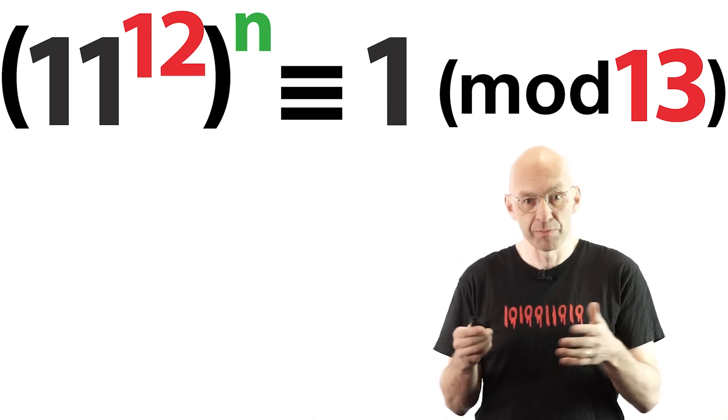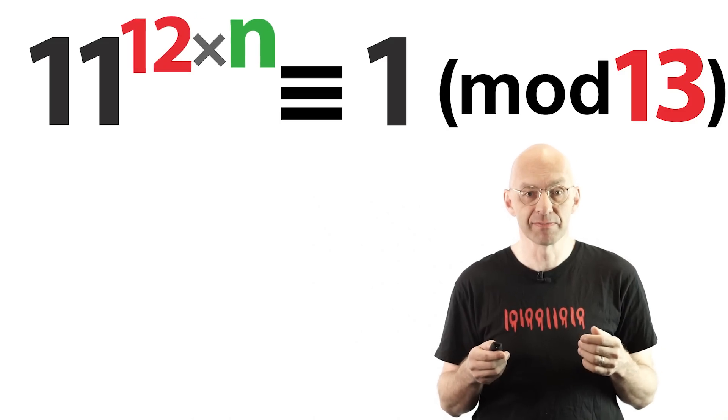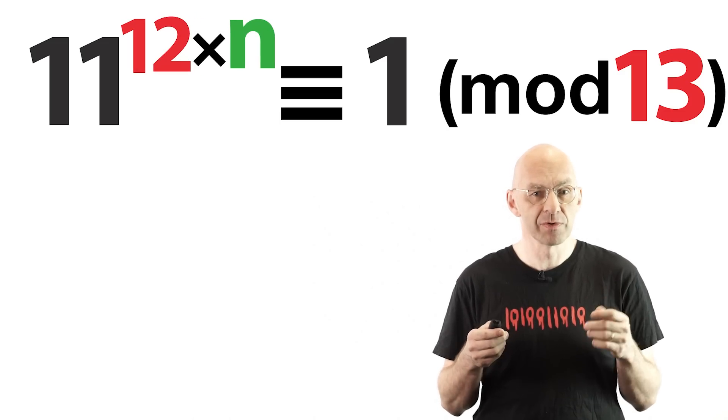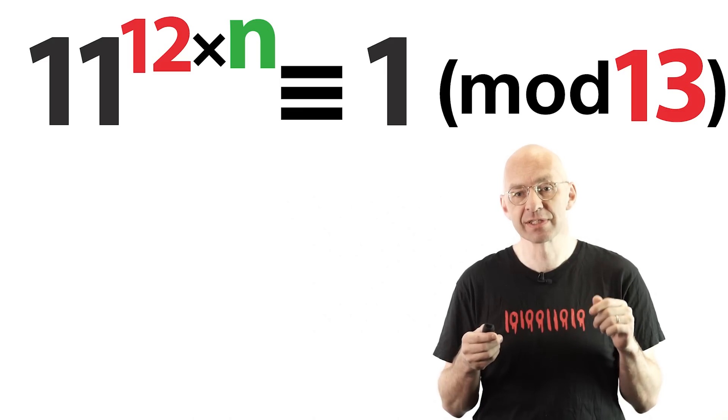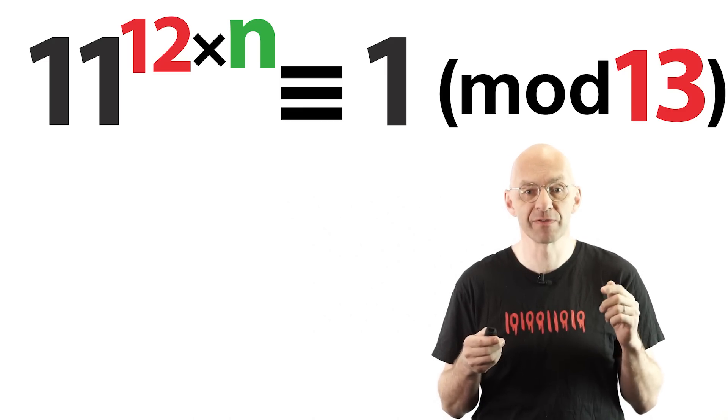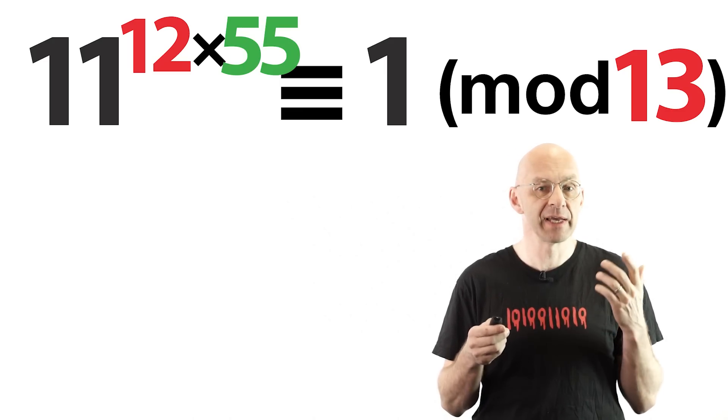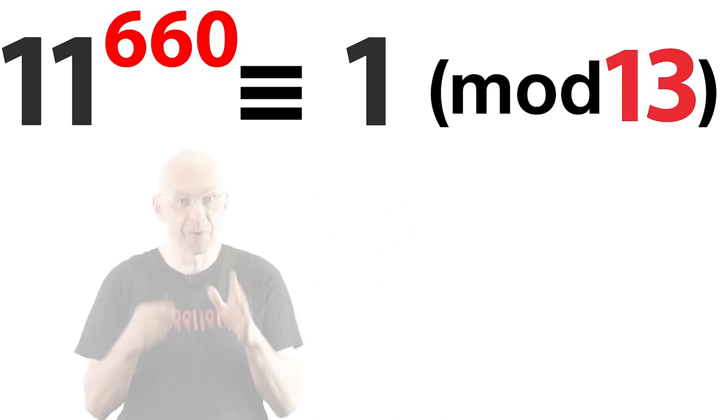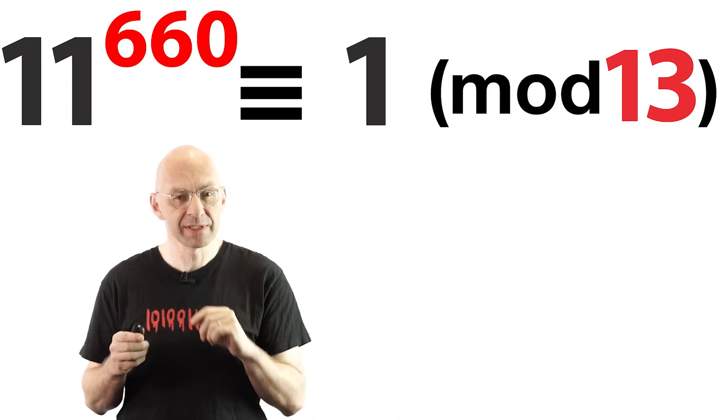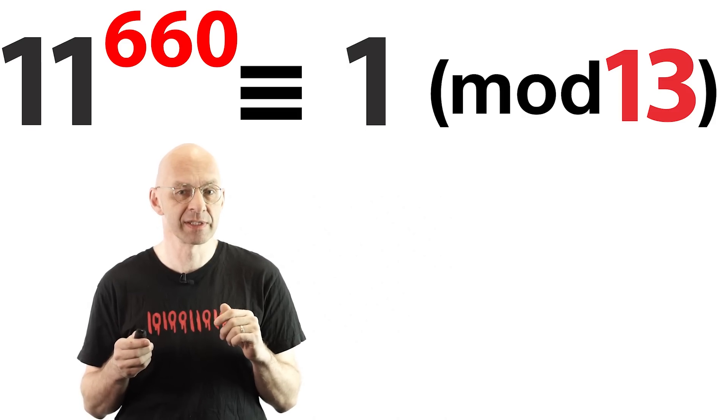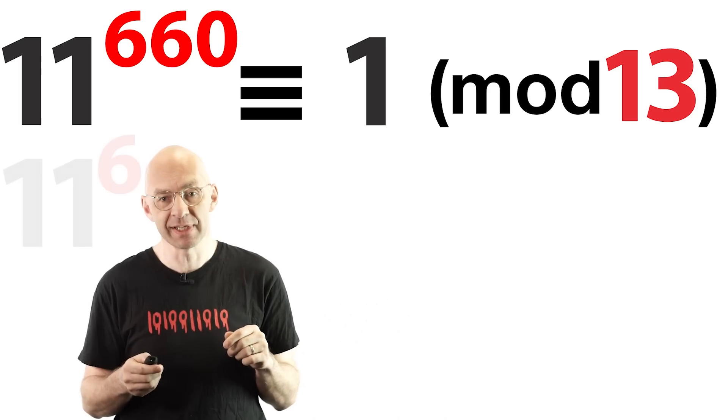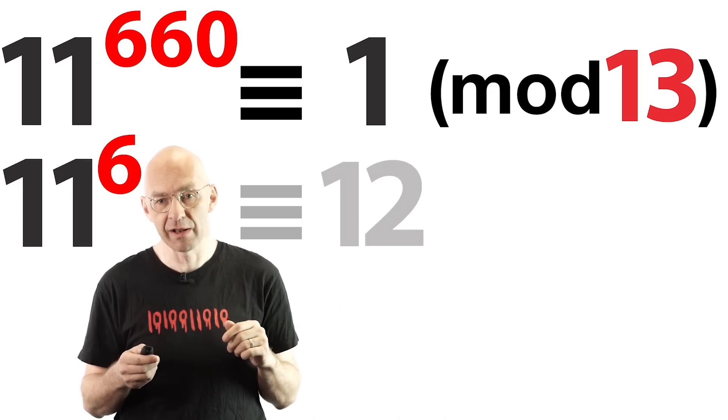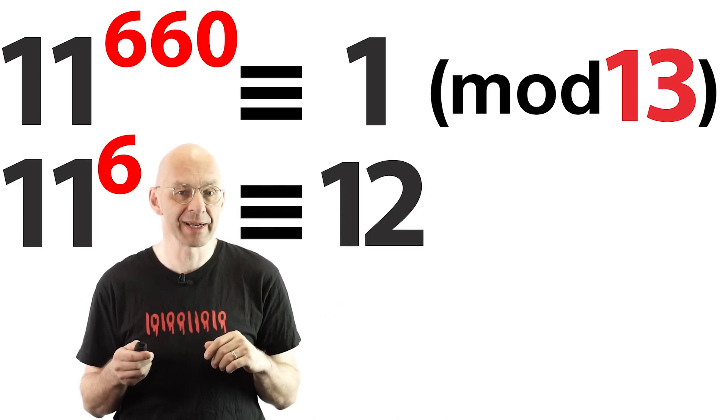Now we've almost revealed our pumpkin. 12 times 55 is 660. So if we choose n equals 55 then we get this. Almost there. The power is still 6 short of our 666. But you can check by hand that 11 to the power of 6 has remainder 12 on division by unlucky 13. Finally, we multiply the left sides together and the right sides together to arrive at our final answer, a remainder of 1 times 12 is equal to 12.